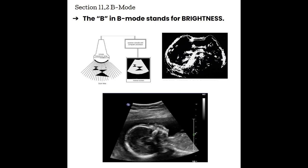Section 11.2, B mode. Now the B in B mode stands for brightness. B mode is our grayscale mode, and that is the one that we typically use to make our diagnostic images. The sector, which is the image window that creates our picture, is made up of many scan lines, each created by one pulse going down to maximum depth and returning to the transducer. On the display, those scan lines are translated into tiny little dots called pixels. In original B mode, the pixel could either be on, representing a white pixel, or it could be off, which was a black pixel.